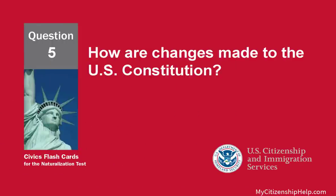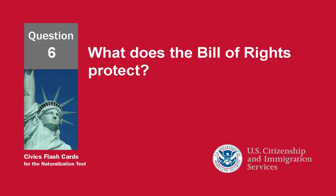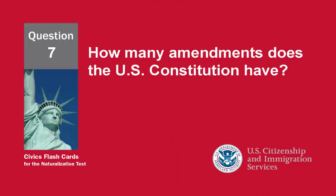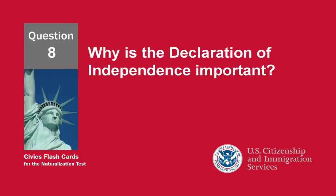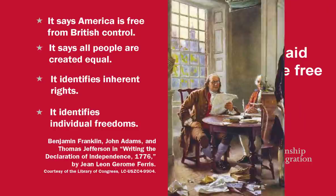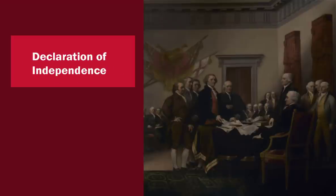How are changes made to the US Constitution? Amendments. What does the Bill of Rights protect? Rights of Americans. How many amendments does the US Constitution have? 27. Why is the Declaration of Independence important? It says all people are created equal. What founding document said the American colonies were free from Britain? Declaration of Independence.